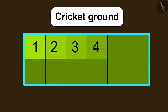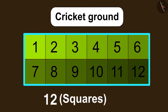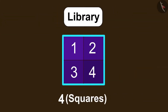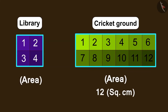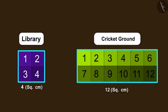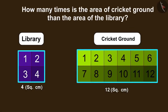In this process, we can find the area of any given place using the number of similar squares that the respective place has. If we look at the cricket ground, it is made of 12 squares, while the library is made of only 4 squares. So the area of the cricket ground is 12 square centimetres, while the area of the library is 4 square centimetres. Now can you tell how many times the area of the cricket ground is more than the area of the library?